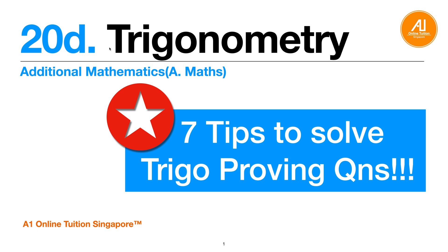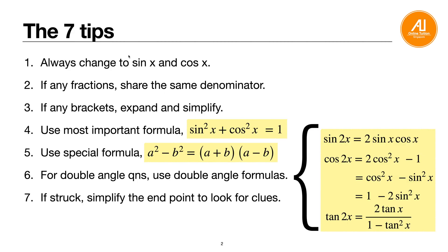Trigonometry and seven tips to solve trigo proving questions. First tip: always change everything to sine and cosine — they are basically the fundamental elements in trigo. Second: for any fractions, always make them share the same denominator. Third: if there are any brackets, expand and simplify. Fourth, the most important formula: sine squared x plus cosine squared x equals one. This formula is very, very useful.